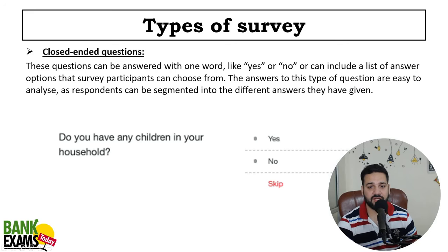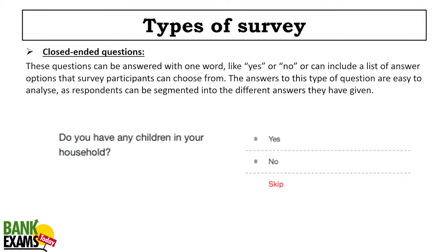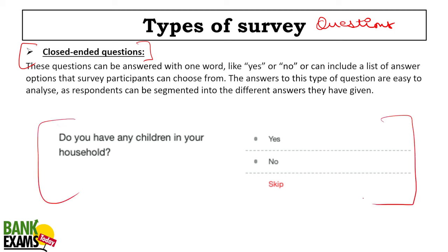So the types of survey questions — the first kind is the close-ended questions. As shown in the picture, in the close-ended kind of questions, these questions can be answered with one word like yes or no. The respondents are not getting the opportunity to express their opinions in words. The answers are predefined.